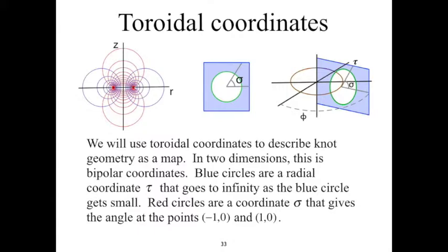In the middle diagram, we see again the R² # P² with a green circle, such that every point on the green circle is attached to the point that is diametrically opposite to it. If we use an angular coordinate σ to describe this circle, then every point at angle σ is attached to the point at angle σ+π. Looking at R³ # S¹ × P² in the diagram on the right, we have extended from bipolar coordinates to toroidal coordinates, which means we include the polar angle φ. In that slice φ, a point at angle σ is attached to the point at angle σ+π, and this is true for every angle φ.